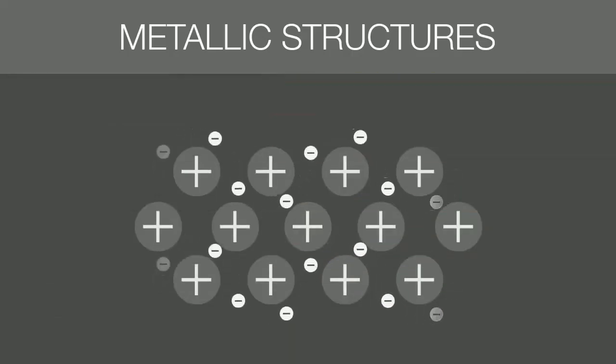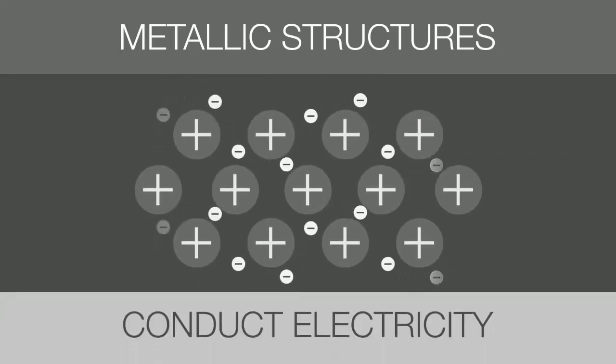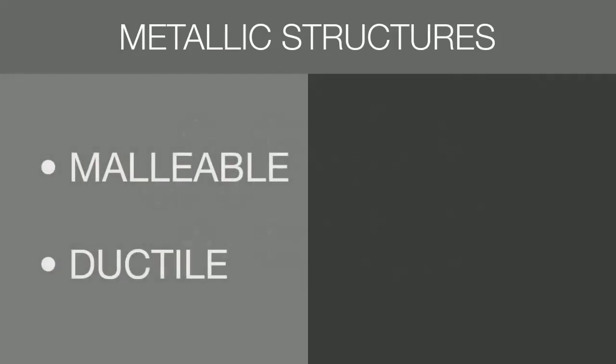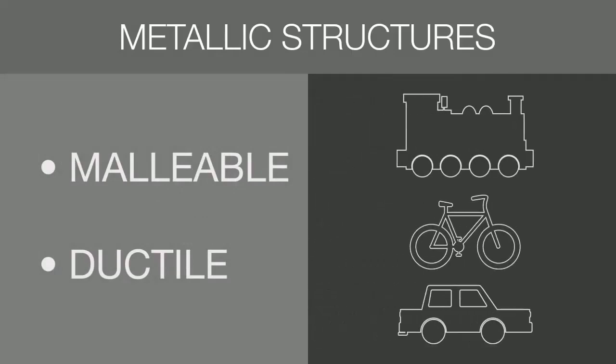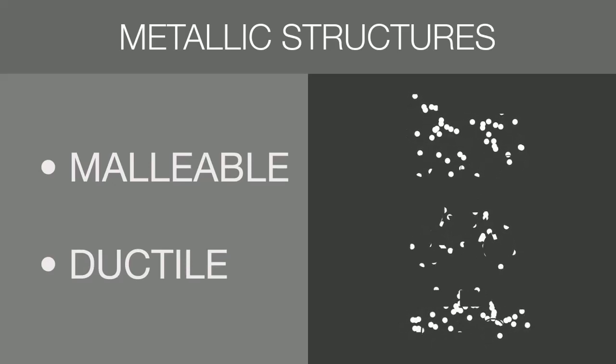Free-floating electrons are the reason why metals can conduct electricity. Metals are malleable and ductile because no matter what shape the metal takes, the free-floating electrons will conform to that shape. The strong electrostatic attraction will remain and therefore the structure stays intact.